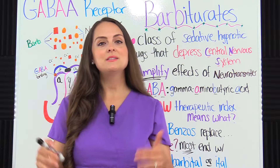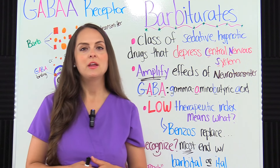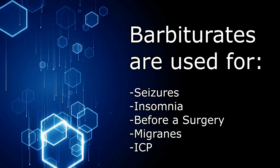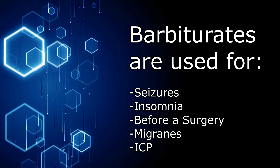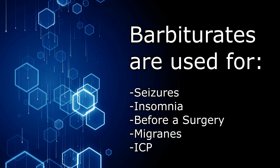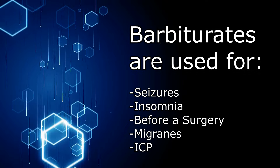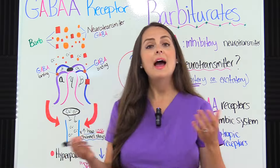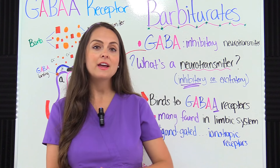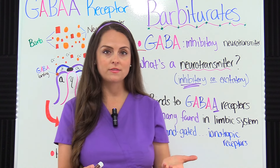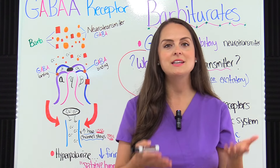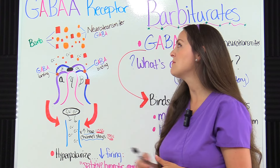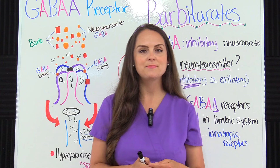Barbiturates can be prescribed to treat patients who have seizures, insomnia, and can be used before surgery, to treat migraines, and sometimes for patients who have increased intracranial pressure. But how do they actually depress the central nervous system and treat those conditions? Let's talk about the mechanism of action of barbiturates.